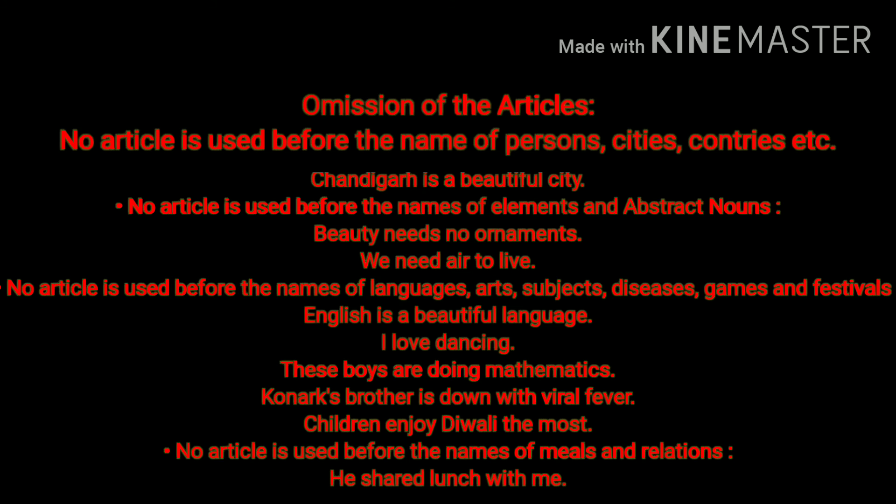No article is used before the names of languages, arts, subjects, diseases, games, and festivals. For example: 'English is a beautiful language,' 'I love dancing,' 'These boys are doing mathematics,' 'Conarch's brother is down with viral fever,' 'Children enjoy Diwali.' Also, no article is used before the names of metals and relations. These are the examples of omission of articles.